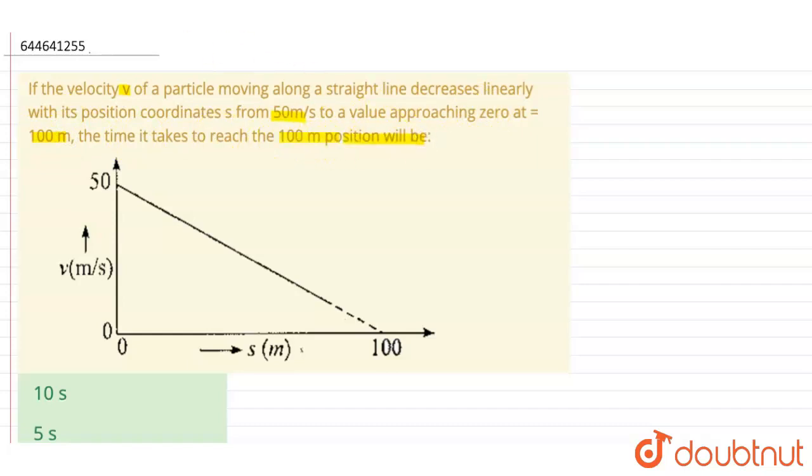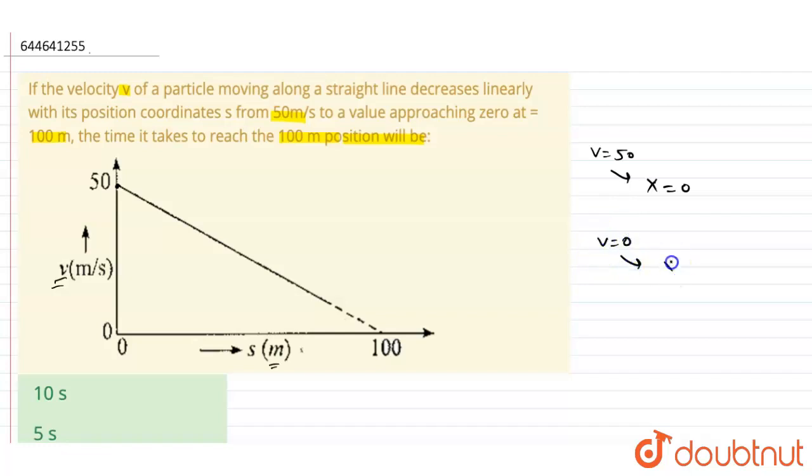Now you can see the velocity will be maximum, which is 50. v is basically 50 at position x equals what? When x is basically 0. And here the velocity becomes 0, v becomes 0 when x is maximum, which is 100. It is given to us.